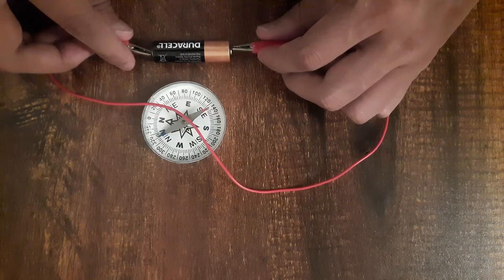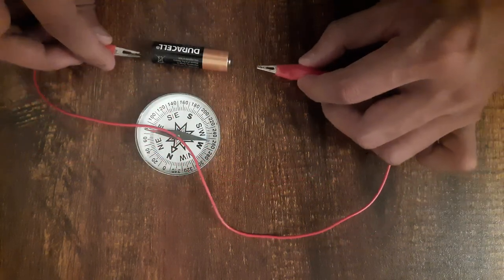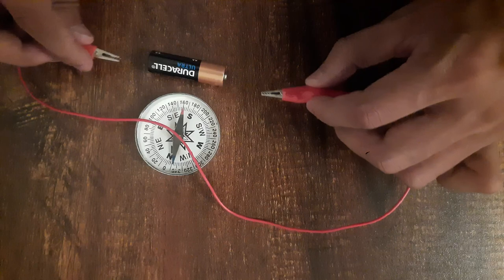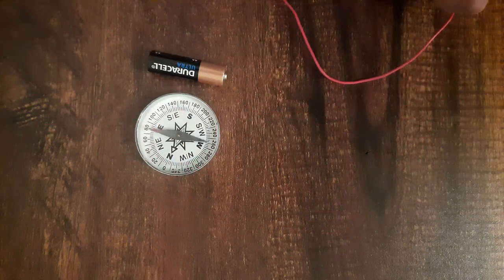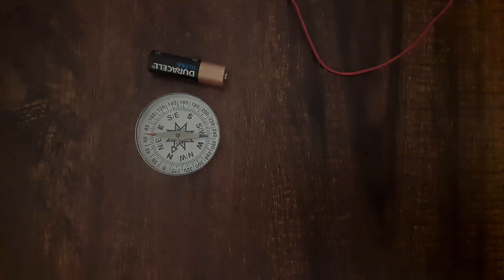Let's see again. They are in contact and see the needle deflecting. Let's have a look at it again. Well, again the needle deflects, and when we remove the contact, the needle comes back to its original position. So why did this happen?